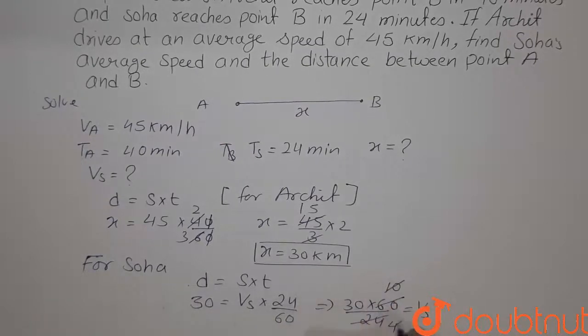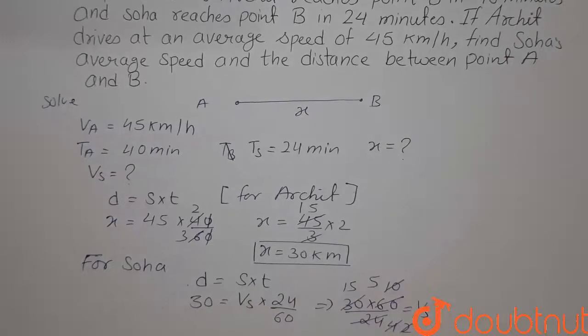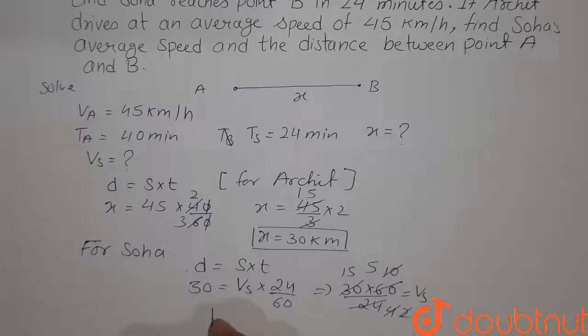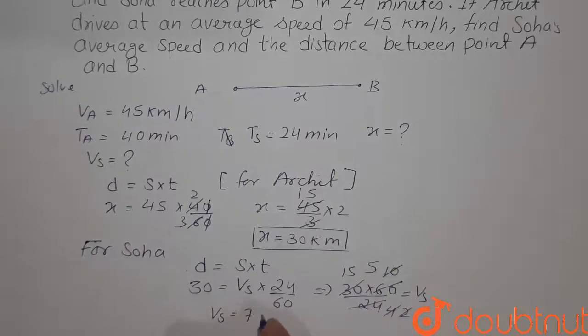It will be divided by 2, so we get 2 times and 5 times, and divided by 2 again, we get 15. Now 15 into 5 is 75 km per hour. So the average speed of Soha, VS, is 75 km per hour.